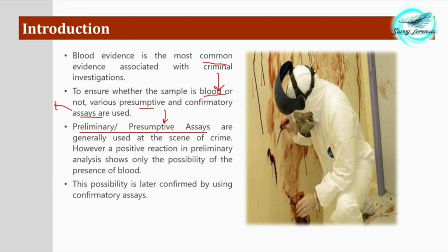Preliminary or presumptive assays, as the name suggests, are generally used tests at the scene of crime. However, a positive reaction in preliminary analysis shows only the possibility — not the confirmation — of the presence of blood. These tests, also called primary tests, are used to gain a possibility that a particular stain might be blood, after which confirmatory assays are carried out to confirm it.